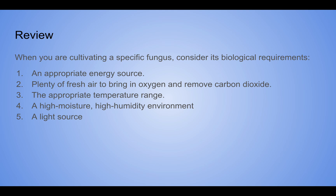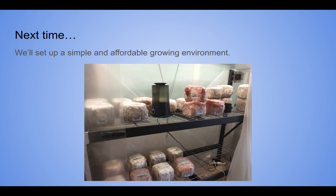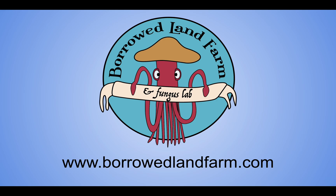To review: you need to think about an appropriate energy source, getting fresh air to your mushrooms, the appropriate temperature range for what you're trying to grow, a high moisture substrate with a high humidity environment around it, and some kind of a light source. Those are the important things your mushrooms need for you to be successful. In our next video, we'll show you how to set up a simple and very affordable growing environment to accomplish all of these goals. I'm Ernie from Borrowed Land Farm — find us at borrowedlandfarm.com. We've got spawn available and commercial fruiting blocks for farms looking to grow out. Thank you and we'll see you next time.